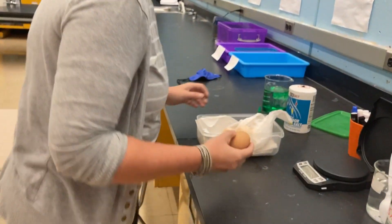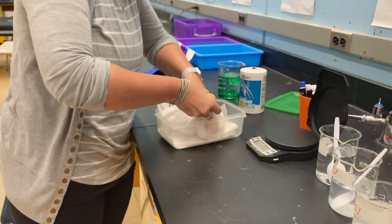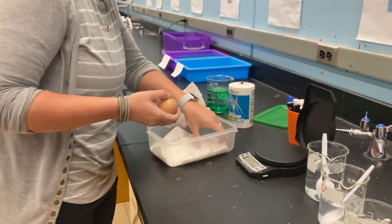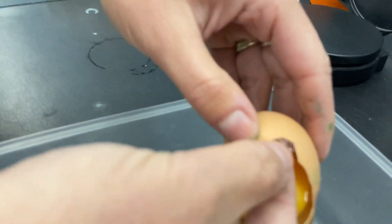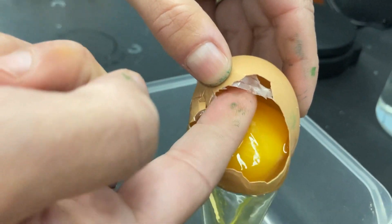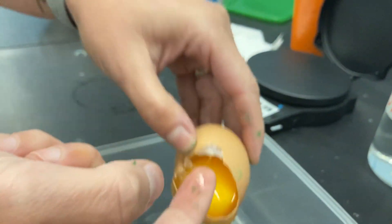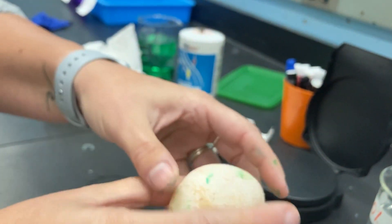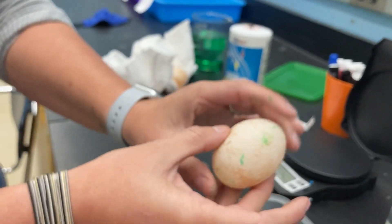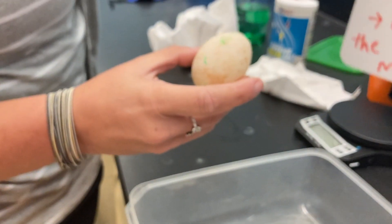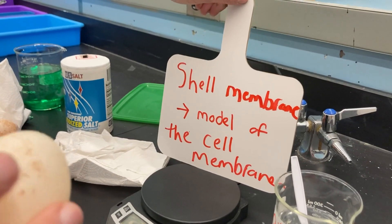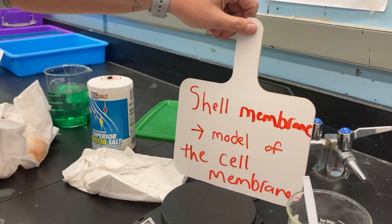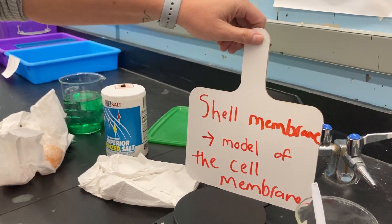If you've ever cracked open an egg before, you'll notice that beneath the hard shell there is a clear layer called the shell membrane — you can see that right there, that little white substance. The vinegar dissolves that hard shell but leaves the shell membrane intact. So this kind of feels like a water balloon. The shell membrane is going to be our model of the cell membrane today, to show how substances can move across it.